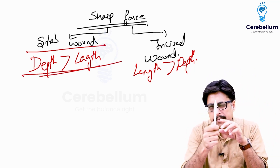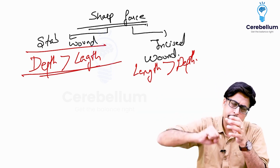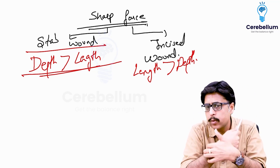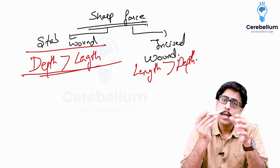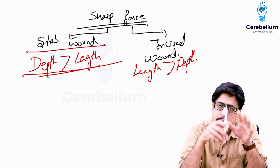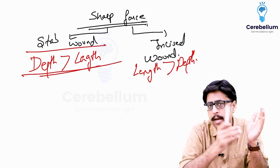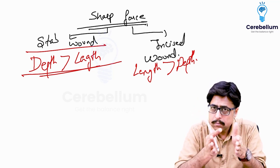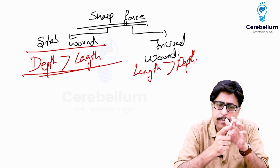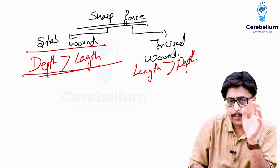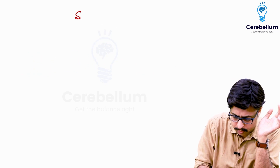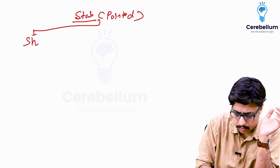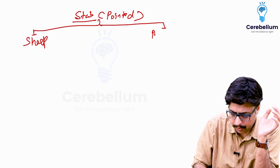Can a stab wound be produced by a pen? Suppose I pierce this pen into the abdomen — is it possible? Yes, it is possible. But this is not a sharp object, so why is stab wound included under sharp forces? Because stab wounds can be produced by a pen, but the chances are lesser. Usually stab wounds are produced by sharp objects like a knife. The stab wound can be produced by any pointed object — it can be sharp or it can be blunt.